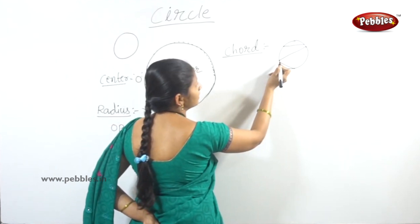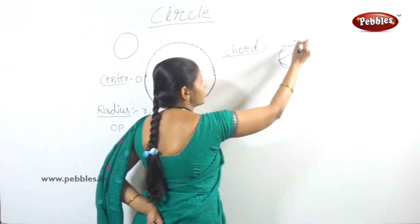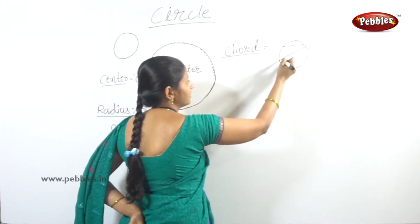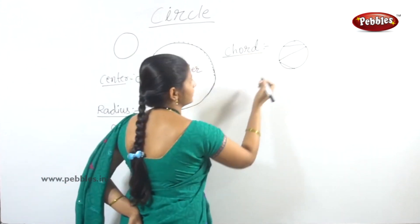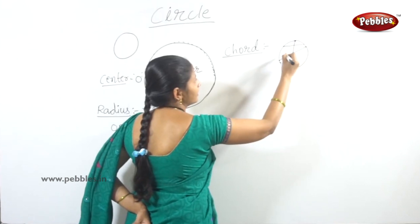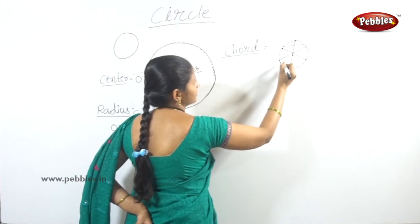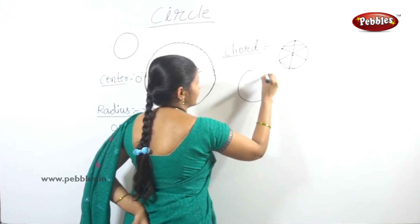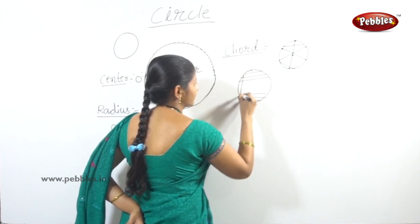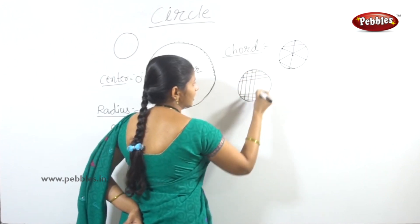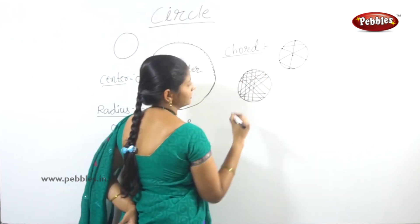A line segment joining any two points on the circle is called a chord. For example, a vertical line, a slanting line, or any two points joined on the circle — all are called chords.